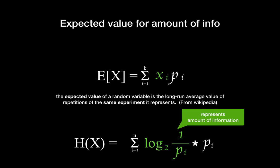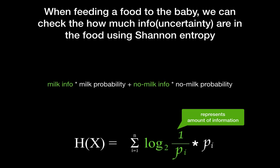Here, the log 1 over p_i represents the amount of info. For example, with our baby example, we can easily know how much information is in the food. Or, we can say how uncertain the baby is about the current food using Shannon entropy. From this slide, you can see the log 1 over p_i is the amount of the information.